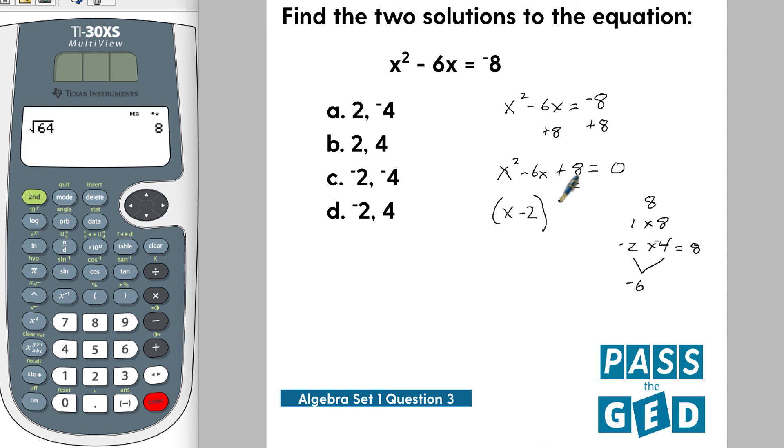If we set this up as x minus 2 times x minus 4, that will in fact give us this equation. If we were to work backwards, we would get this equation.